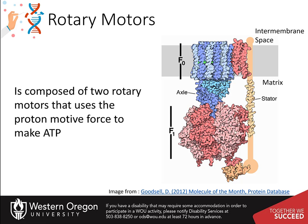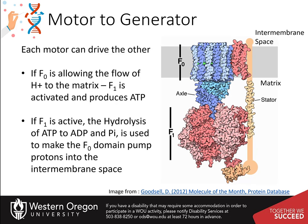The F-1 motor is a chemical motor, powered by ATP. The two motors are connected together by a stator, shown on the right. So why have two motors connected together? The trick is that one motor can force the other motor to turn, and in this way change the motor into a generator.